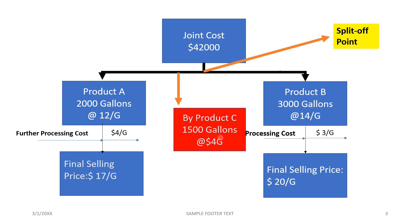This is a very important point. If the byproduct is inventoriable, you deduct its value from the joint cost before allocation. If it is not inventoriable, the whole joint cost is divided among the main products.